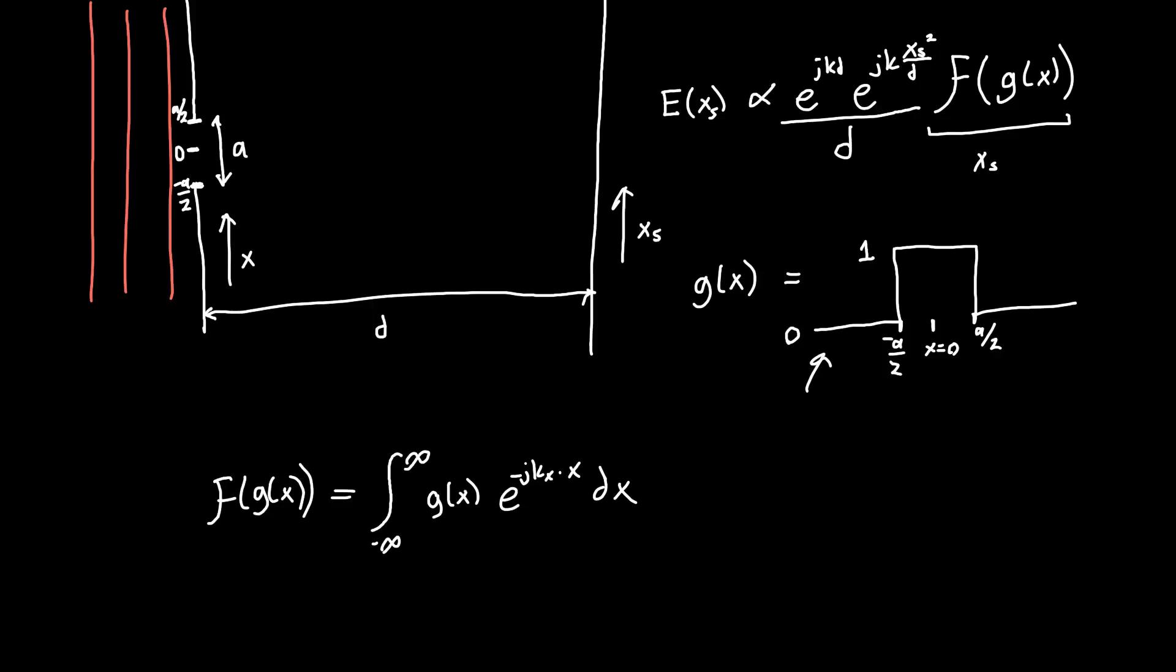In this case, g of x is just equal to 1 from minus a over 2 to a over 2. So we can replace the bounds of integration. This becomes minus a over 2 and this becomes a over 2. And this 1, we can just ignore because this is 1. So we're just integrating e to the minus j kx times x dx.